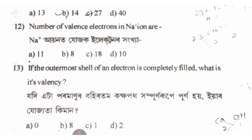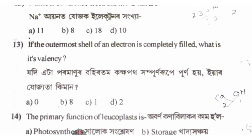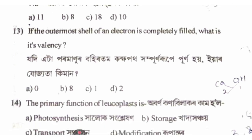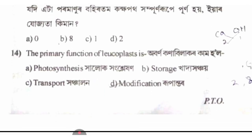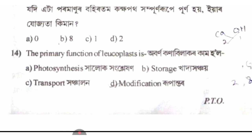If the outermost shell of an electron is completely filled, what is its valence? The answer is zero. The primary function of leucoplast is storage.